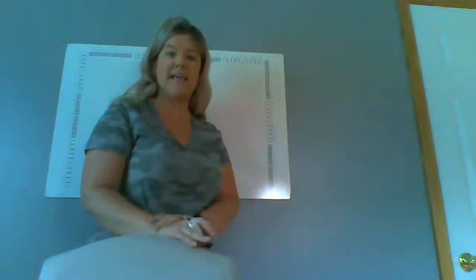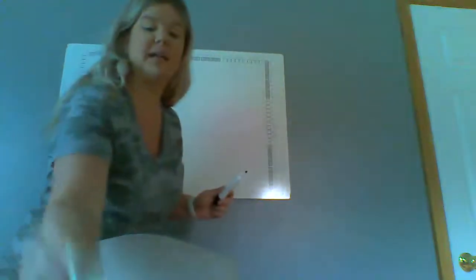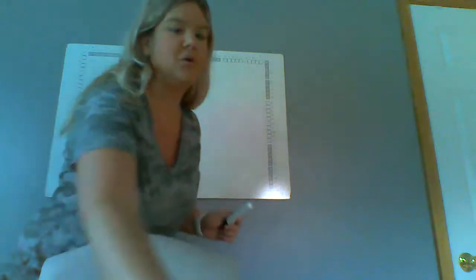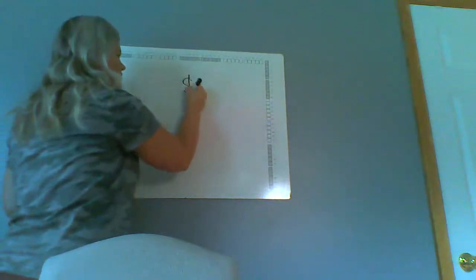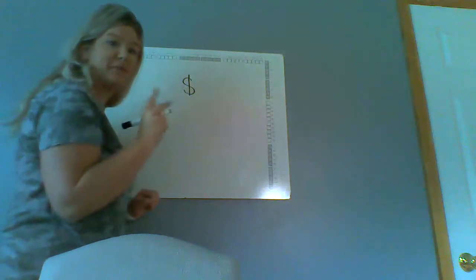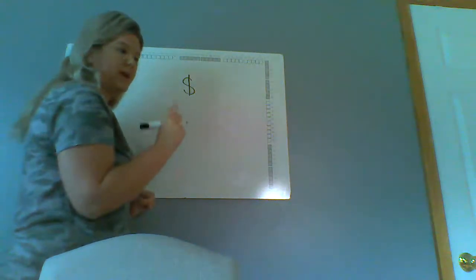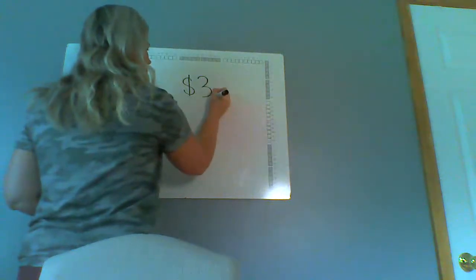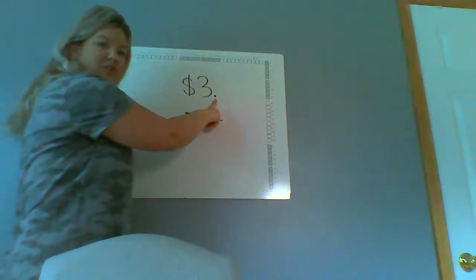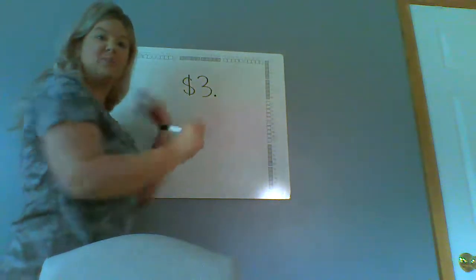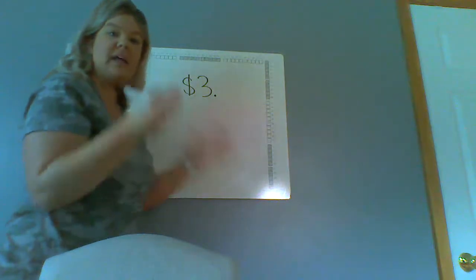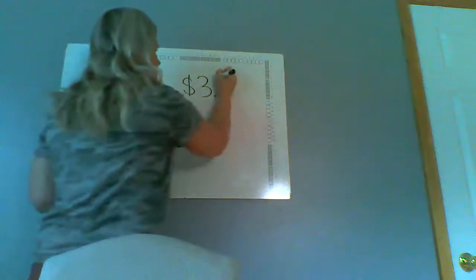Let's practice writing those numbers one more time before we get started with our game. So this morning I have $3.72. What do I start with? What's my symbol? My symbol looks like a dollar sign because I have dollars. Let's start with our symbol. Now I had $3 — and what is this called? Who remembers from yesterday? My decimal — my divider between my dollars and my change. You always have to have a separator. And then 72.